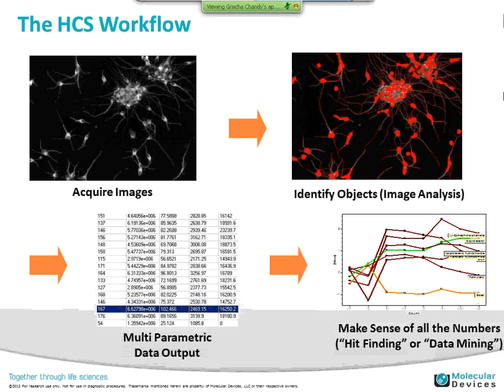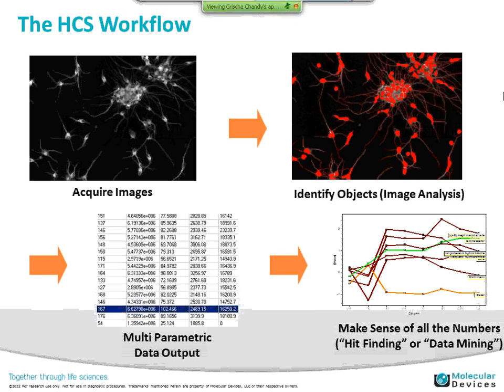The HCS workflow is to acquire images with an automated microscope, automatically identify and segment objects of interest, and then make numerical measurements from those images with multi-parametric data output — a table with lots of numbers coming out of the system. The final part of the workflow is to data mine or do curve fitting with the numerical data generated.